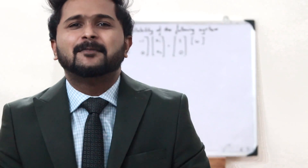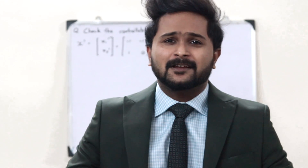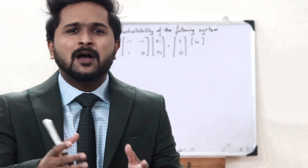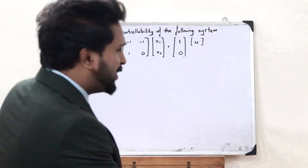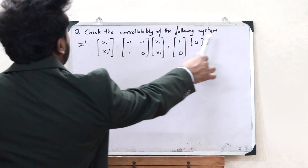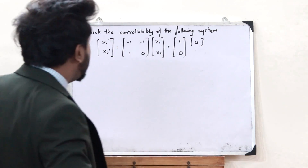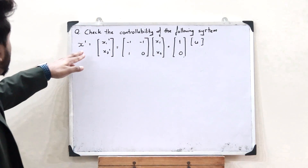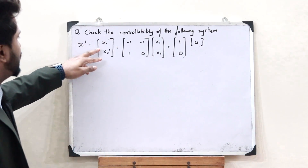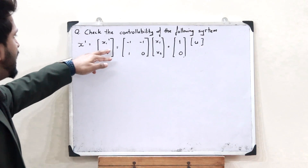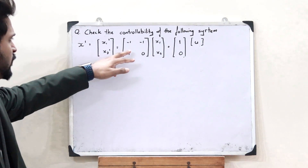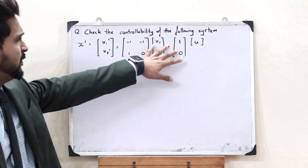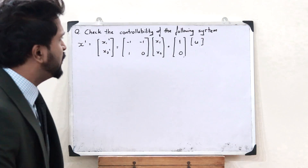My name is Vishy Ramjoo. Welcome to the MacMachian Engineering Community, where I am going to make it easy for you. So let us see this particular question: check the controllability of the following control system. Here, it is given as x' = [x1, x2]', which equals this particular matrix into [x1, x2] plus this particular matrix into u.